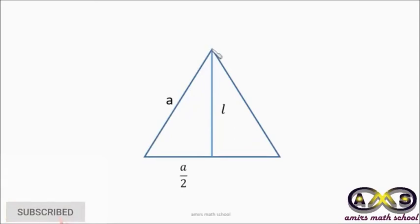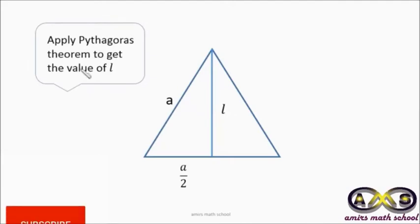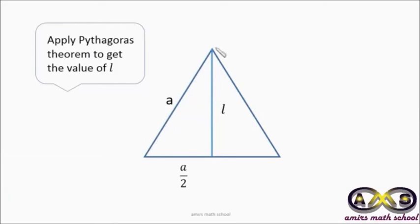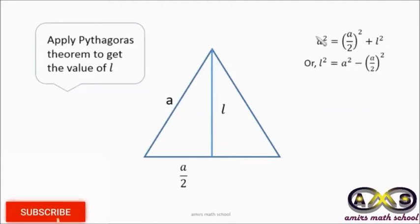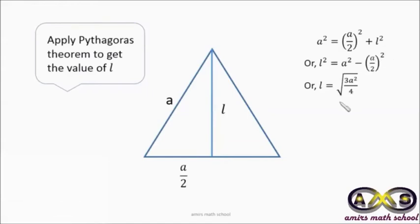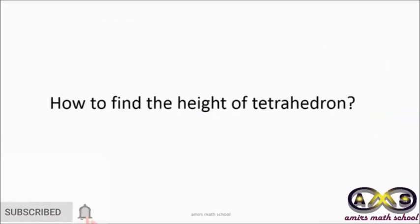For an equilateral triangle with side a, the median divides the opposite side into two equal parts, so that half-base value is a/2. Applying the Pythagorean theorem to the right triangle formed: a² = (a/2)² + l², so l² = a² − a²/4 = 3a²/4. Therefore, the slant height l = (√3/2) · a.